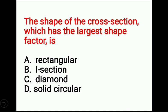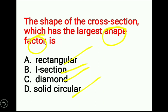Second question: the shape of the cross-section which has the largest shape factor is? The four options are: rectangular, I-section, diamond, solid circular. Shape factor is the ratio of plastic moment to elastic moment (yield moment). Different cross-sections have different shape factors. Rectangular has a shape factor of 1.5. I-section has a shape factor varying from 1.12 to 1.15.